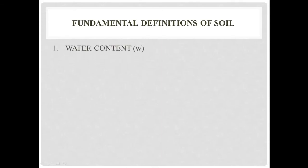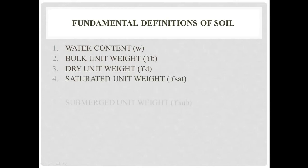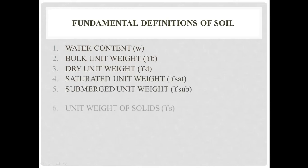Let us move further to fundamental definitions. These are the terms which you have already studied in your previous academic semesters. First is water content - that is the amount of water held by the soil. Next, bulk unit weight. Unit weight and volume are equivalent - when you consider weight upon total volume, that gives you bulk unit weight. If you consider dry soil solids weight by total volume, that is dry unit weight. Similarly, saturated unit weight and submerged unit weight.